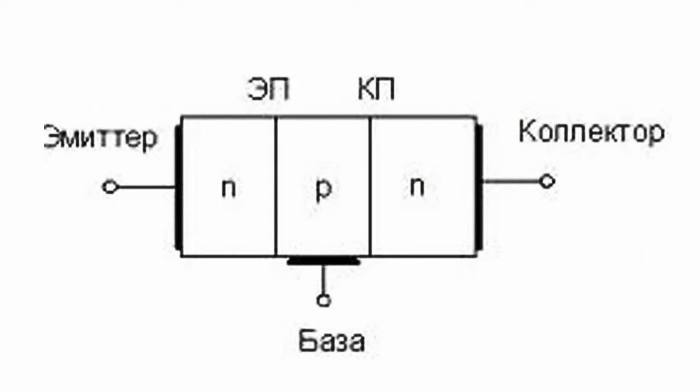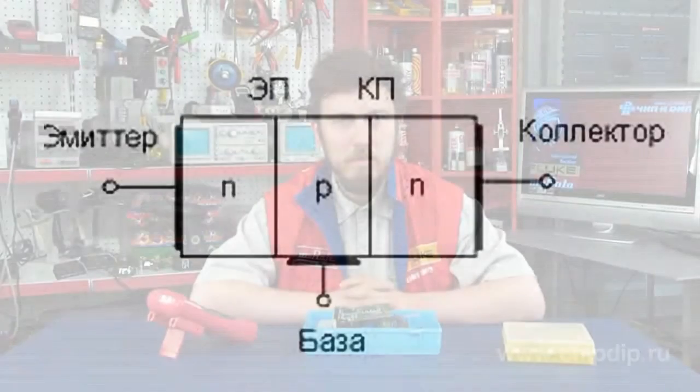In the inverse mode, the collector junction acting as an emitter junction is connected in the forward direction and the emitter junction acting as a collector junction in the reverse direction. In the case of PNP structure, holes are injected into the base by the collector of the transistor and are extracted by its emitter.